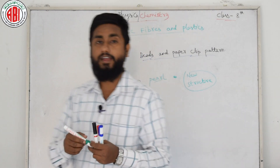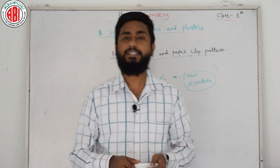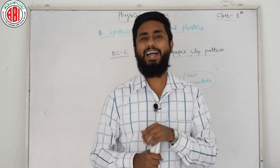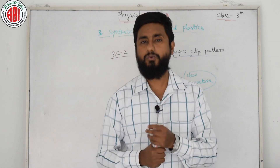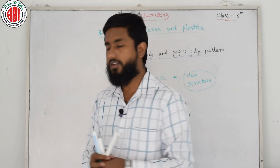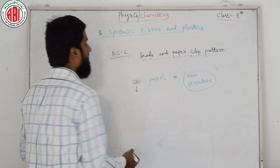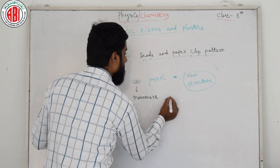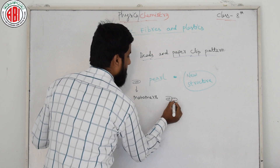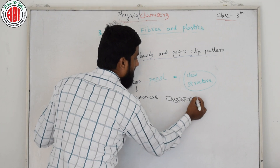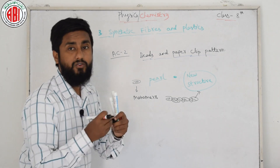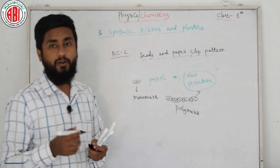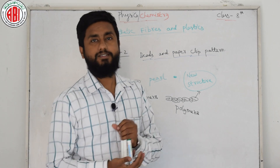Similarly, synthetic fibers are made of chain-like structures which are themselves formed by joining small units together. Each small unit in the chain is known as a monomer unit — M-O-N-O-M-E-R. Many small identical units called monomers combine to form a large unit called a polymer — P-O-L-Y-M-E-R-S. Synthetic fibers are made of polymers.